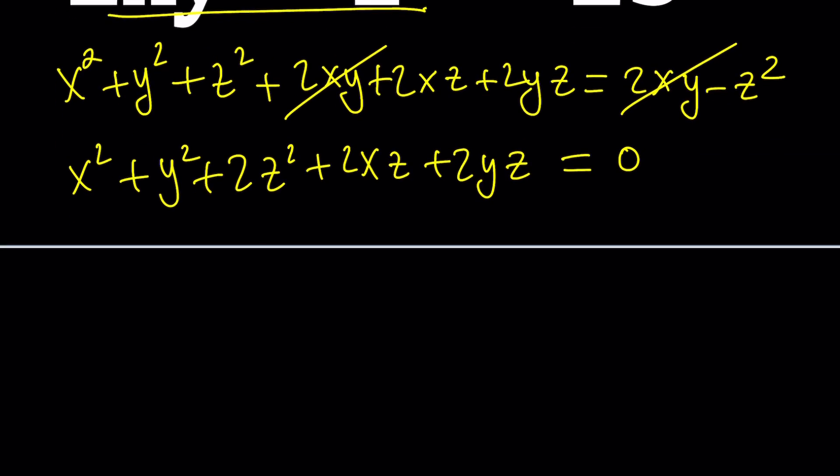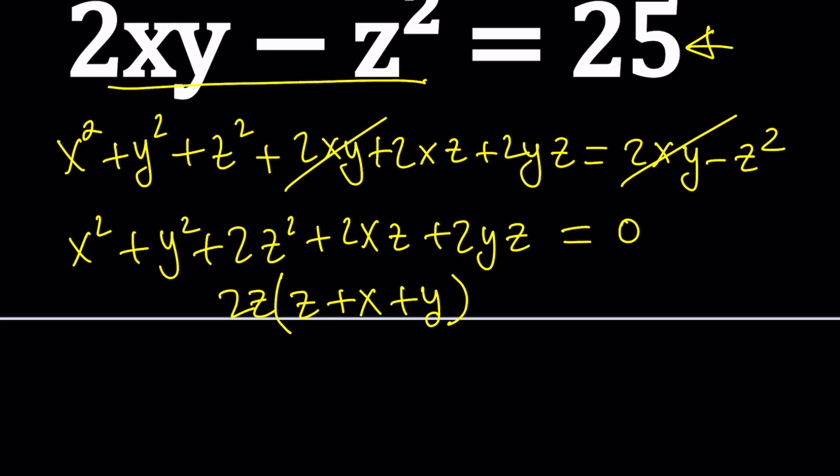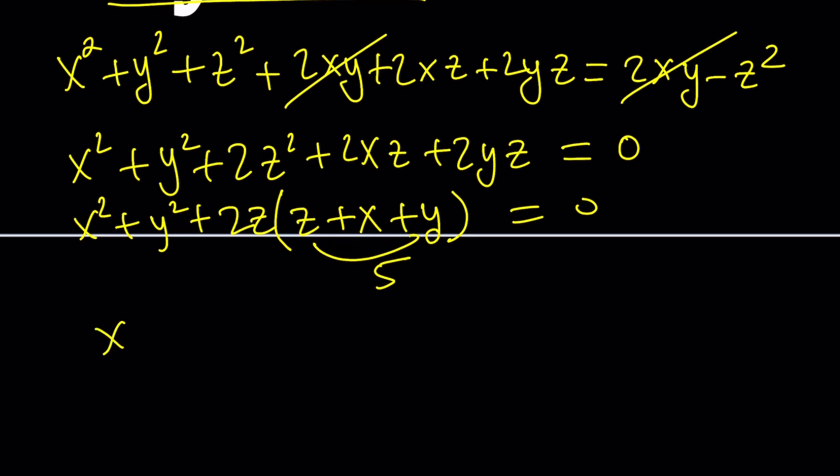Now at this point, you can do a couple different things. You could probably factor out a z here, maybe, or 2z, that'll give you z plus x plus y, and then you can replace it with 5, and that should give you something like this. Let's find out. This is 5, so we should be getting x squared plus y squared plus 10z equals 0. Does that help at all?